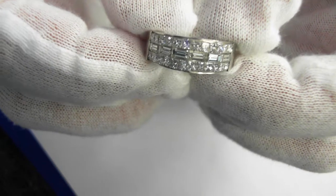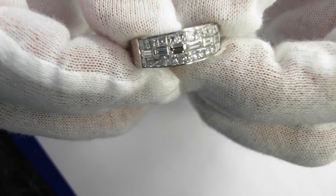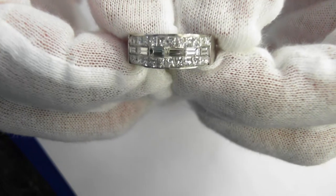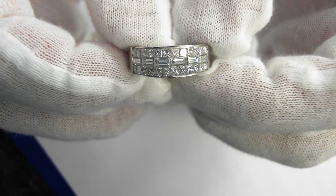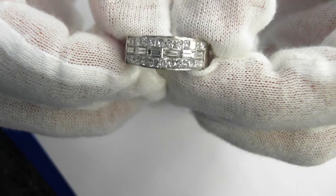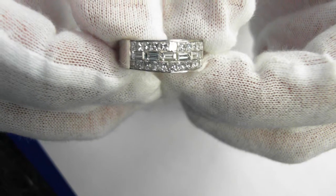Here we have a ladies 18 carat diamond band containing invisibly set princess and invisibly set baguette cut diamonds. The average color is G color, average clarity is VS2, 9.1 grams.